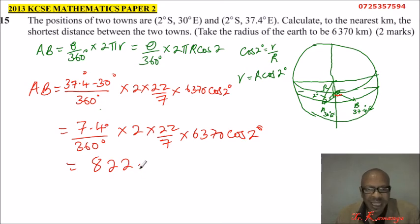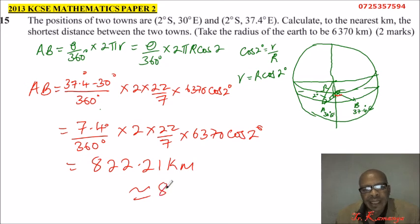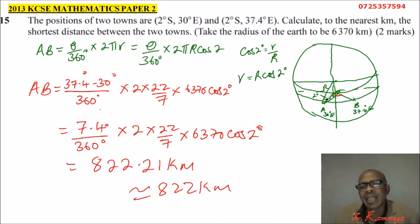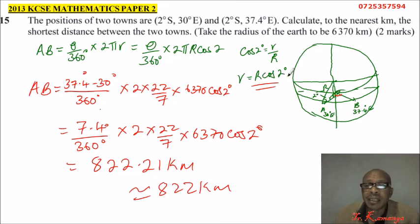That gives you 822.21 kilometers, or simply about 822 kilometers. That is the distance between A and B. This is very important: when working at a latitude other than the equator, remember to convert the radius using r = R cosine(θ) — that is how you convert the radius of the small circle in terms of the radius of the earth.